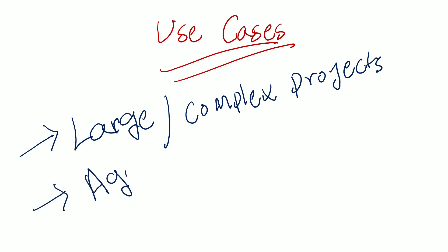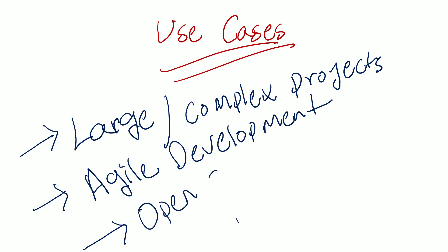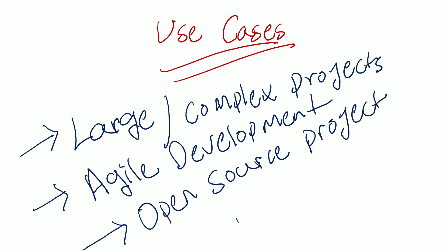We can also use CI for agile development. Agile teams often rely on CI to ensure that code changes are integrated and tested frequently, which helps to reduce the risk of delays or disruptions. Additionally, continuous integration can be particularly useful for open source projects, where multiple developers may be contributing code changes from different locations around the globe.